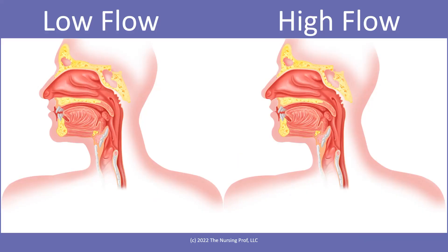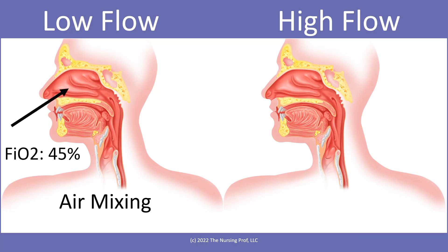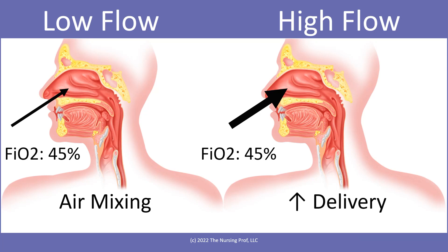Let's look at the difference between low flow and high flow oxygen and how it works with that dead space. On the left side we have low flow with FiO2 at 45 percent — there is air mixing occurring in the nasal pharynx, so we're not really getting that 45 percent all the way down into the lungs. However, on the right side with high flow, even though it's still a 45 percent mix, it leads to less air mixing and higher delivery because we're blowing away the exhaled gases sitting in that dead space area, getting more oxygen down into the lungs.